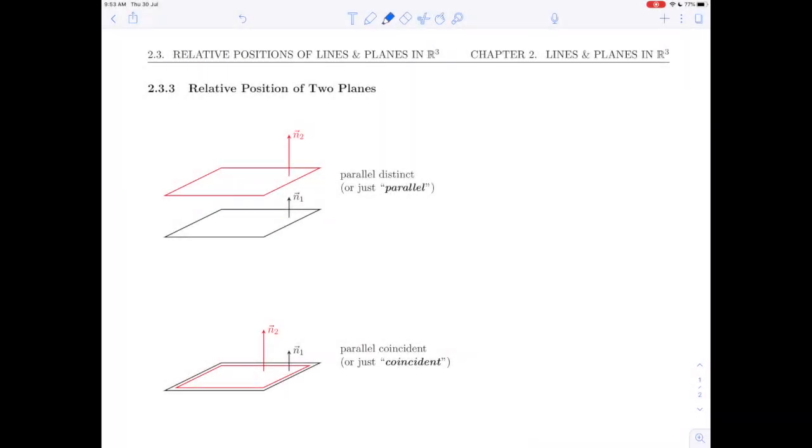Welcome back everybody. In this video we are going to start the last section of our 2.3 relative position of lines and planes by doing 2.3.3, the relative position of two planes. In previous videos we did two lines and a line and a plane, and this is going to be the last section: two planes.